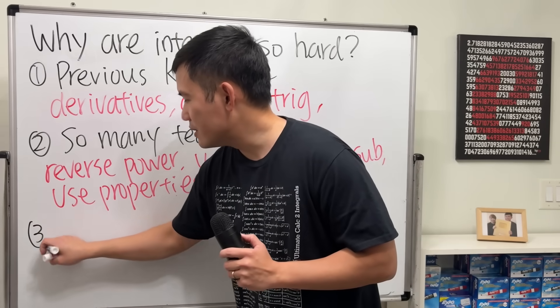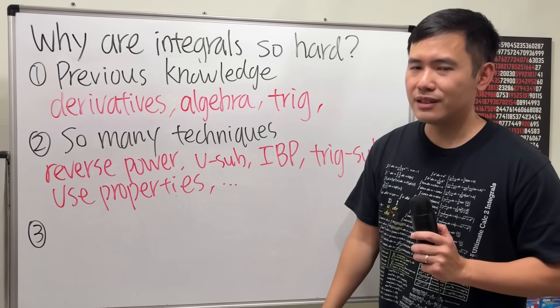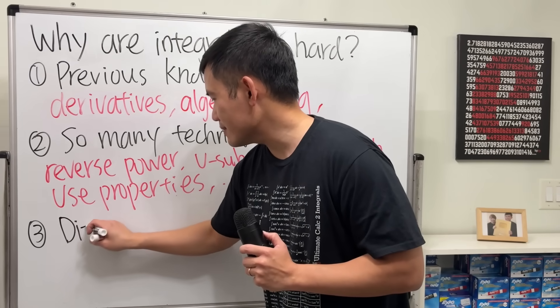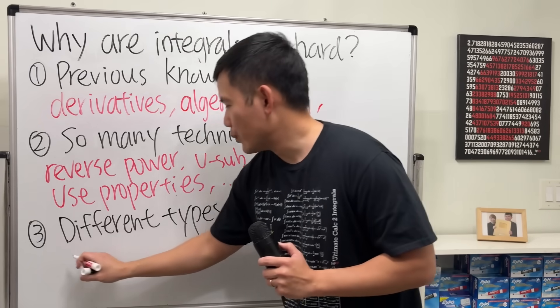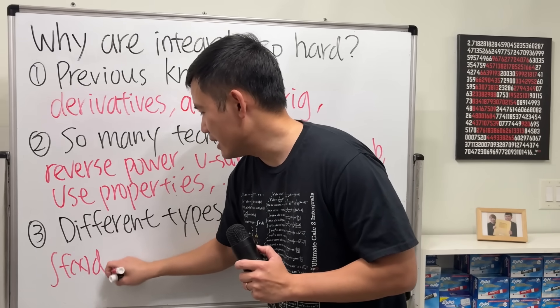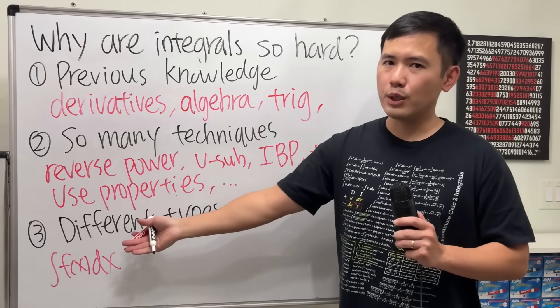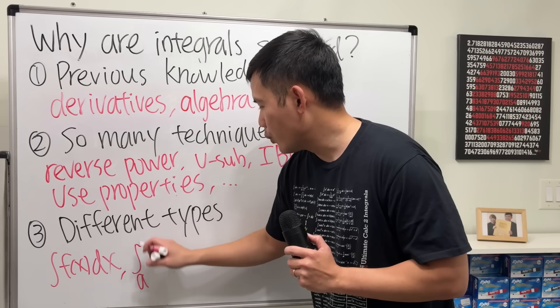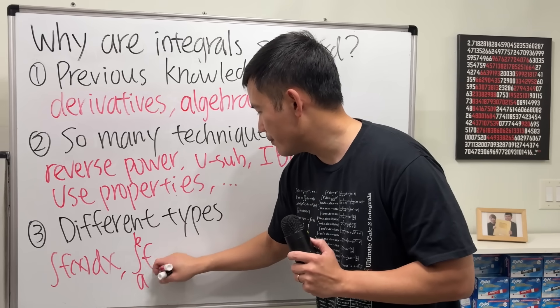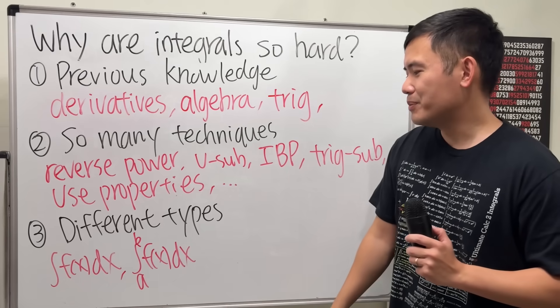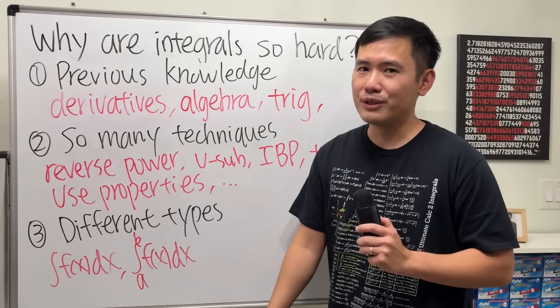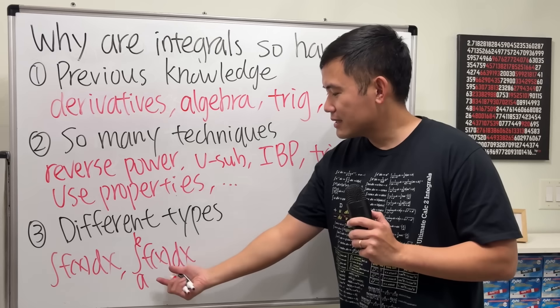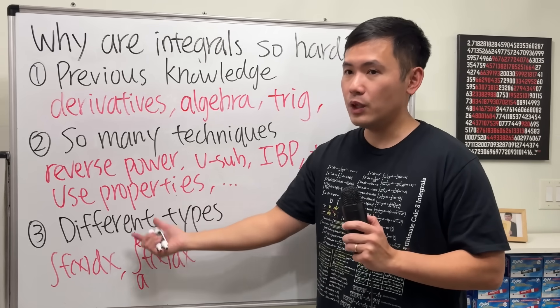Okay, besides having so many different techniques, guess what? We actually also have different types of integrals as well. First, we have the integral of f of x. That's just the indefinite integral. You just pretty much have to do the antiderivative for that. And then we have the definite integral where we have a and b right here. And this is harder because at the end, you still have to plug in the numbers. And sometimes, we may make some arithmetic mistakes. And for this, sometimes, you may have to use properties in order to figure out.